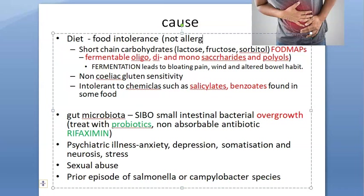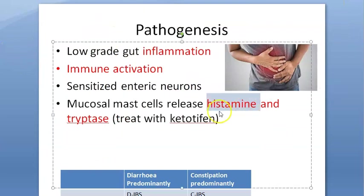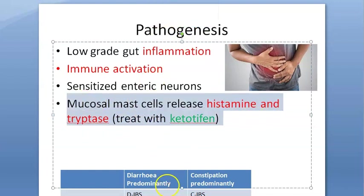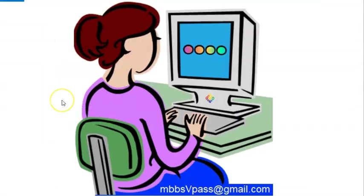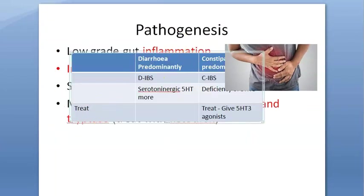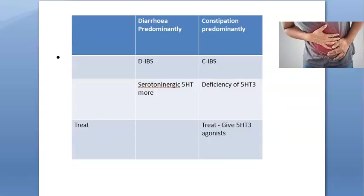So histamine and tryptase are present, but it is not being called an allergic reaction. You can treat this with ketotifen, which is a mast cell inhibitor. There is some low-grade gut inflammation, but if there were true high-grade inflammation it would be inflammatory bowel disease — like Crohn's or ulcerative colitis — which is different.